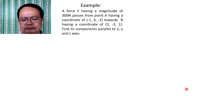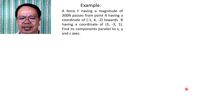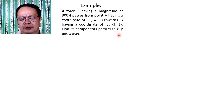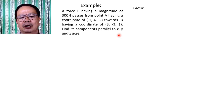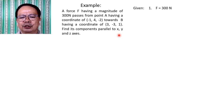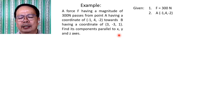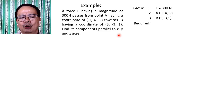Let us have an example. A force F having a magnitude of 300 N passes from point A having coordinates (−1, 4, −2) towards point B having coordinates (3, −3, 1). Find its components parallel to the X, Y, and Z axes. What is given: magnitude F = 300 N, coordinates of point A at (−1, 4, −2), and coordinates of point B at (3, −3, 1). We are required to find F_x, F_y, and F_z.